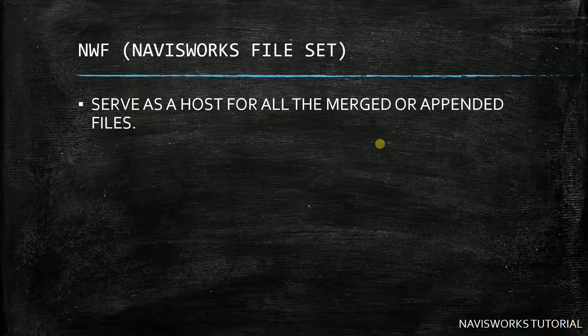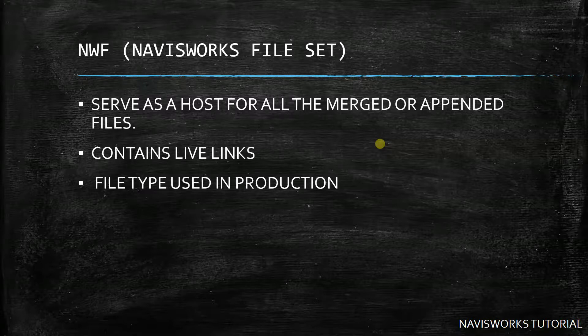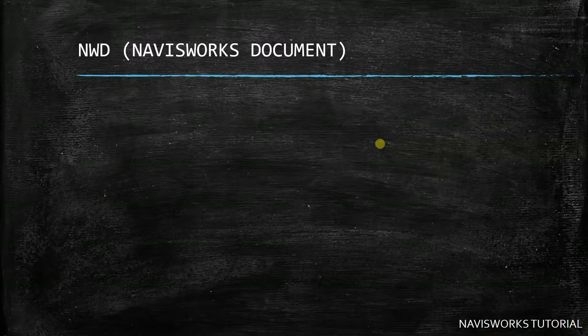NWF is the file type used in production. When you update an AutoCAD or Revit file, or export a Revit model to NWC, the NWF model will automatically update because it contains live links. If you send an NWF file to a client, make sure you include all the linked models, otherwise they will not be able to see them.